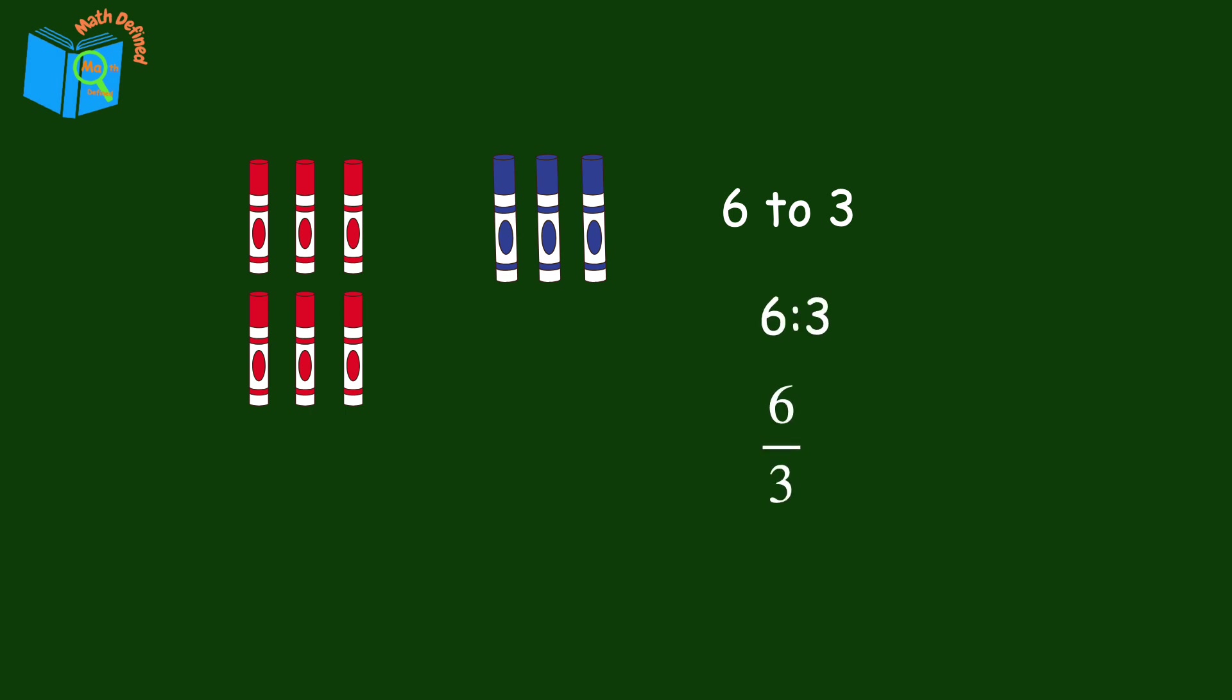Remember, order is very important when writing a ratio. You must write the numbers in the order they were given. In this case, the order is red markers to blue markers. Let's go back and look at the ratio written as the fraction, six over three. Both numbers share a common factor, so we can simplify it.